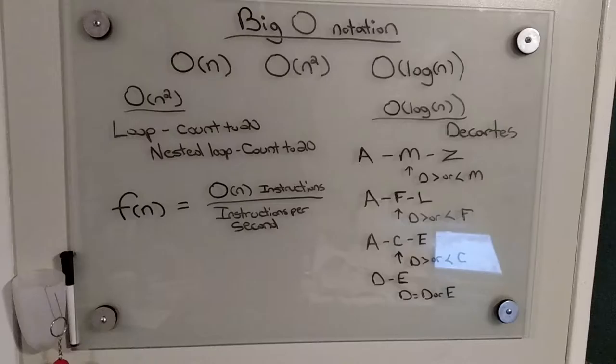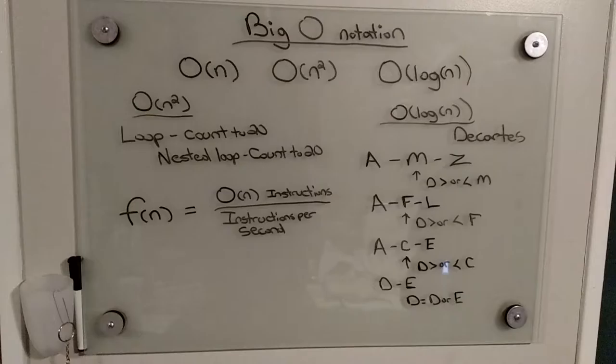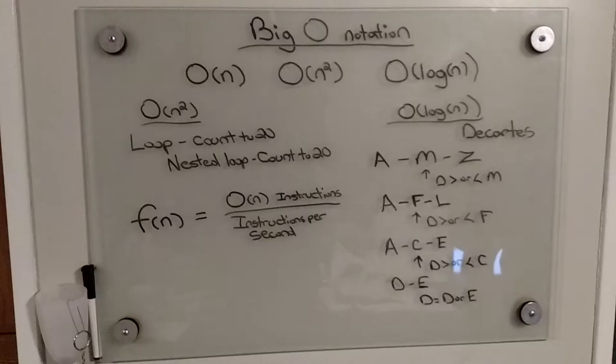What Big O Notation actually does is it evaluates the efficiency of a computer algorithm, essentially the speed that it performs at.